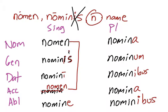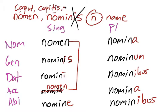And so we've declined a noun in third declension neuter. The other third declension neuter noun we have in this chapter is kaput, which means 'head.' So it's kaput, kaputus, neuter, 'head.' Now let's move on to third declension neuter i-stems.